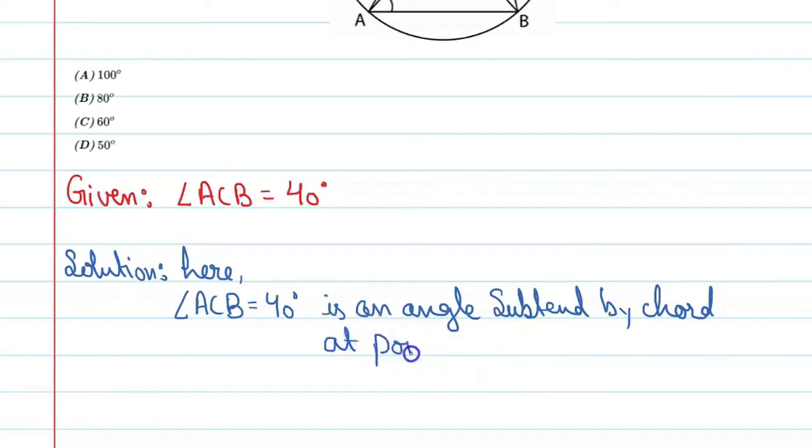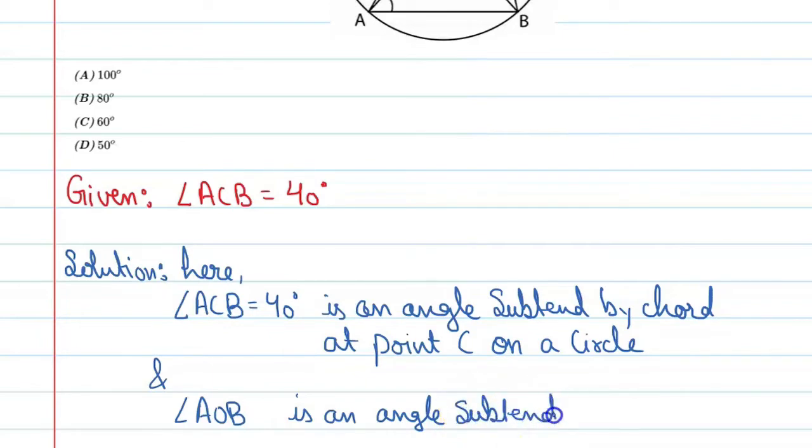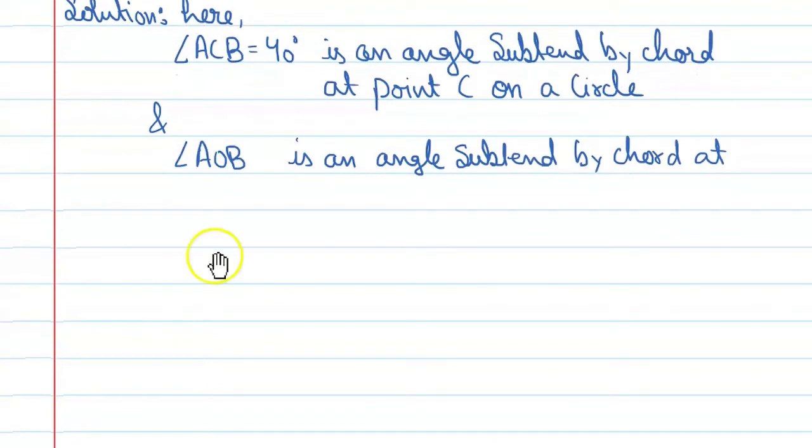Angle ACB is an angle subtended by chord at point C on a circle, and angle AOB is an angle subtended by chord at center O of the circle.